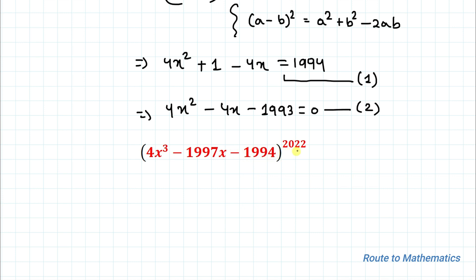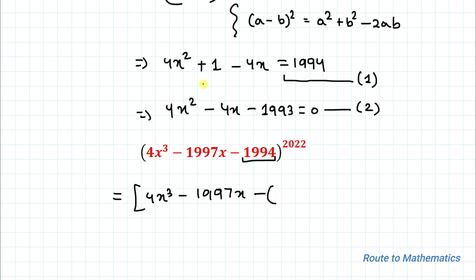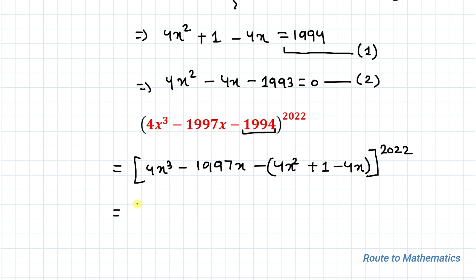The first thing I'll do is replace 1994 with the value from equation 1, that is 1994 equals 4x² plus 1 minus 4x. So we have 4x³ minus 1997x minus (4x² plus 1 minus 4x), whole to the power 2022.